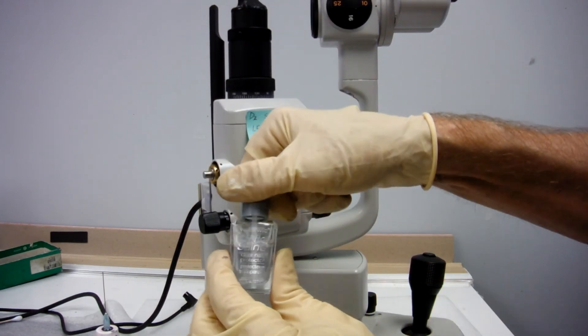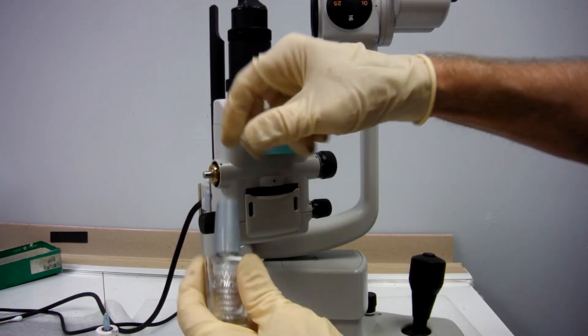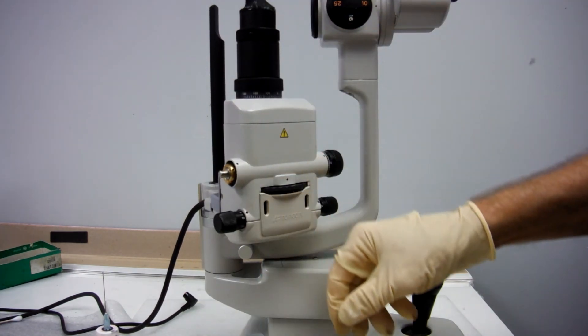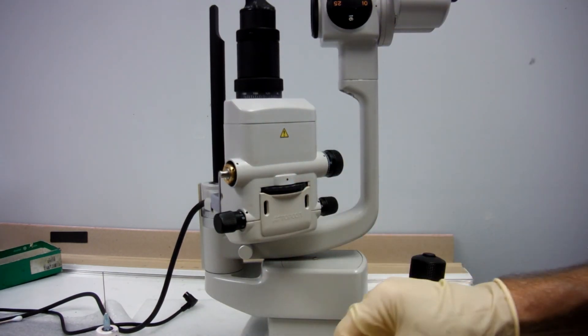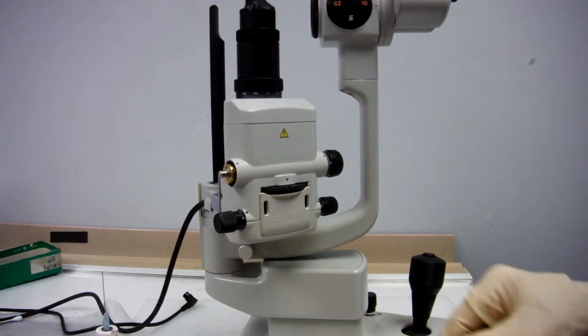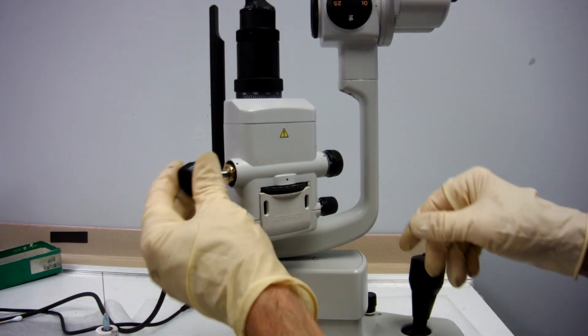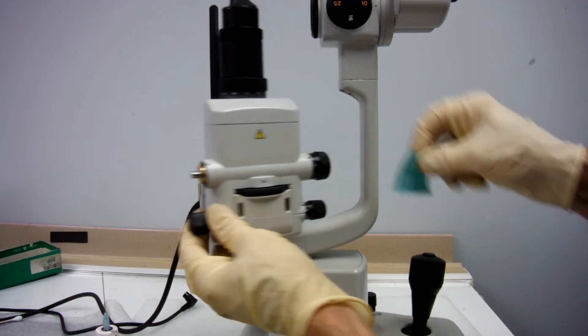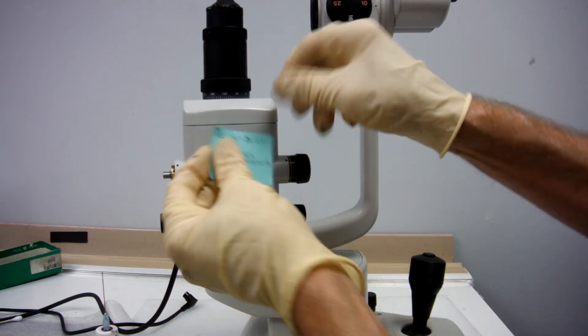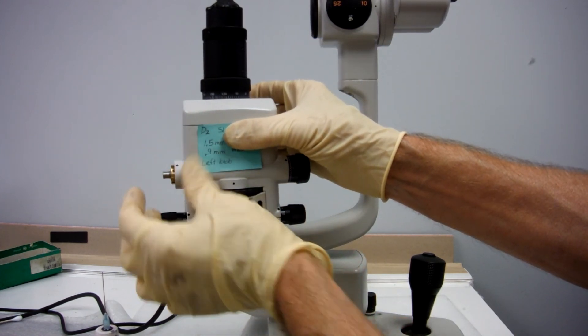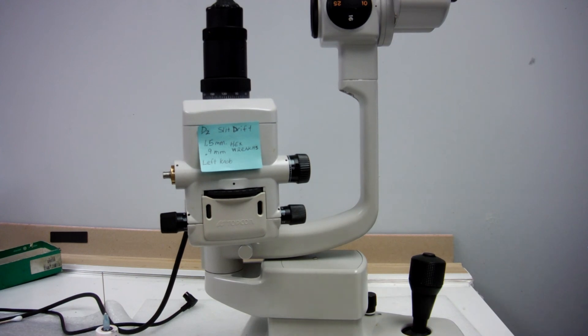You might want to put a little fingernail polish in there to keep it from coming out, and you can put your knob on. So there you go.